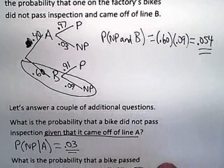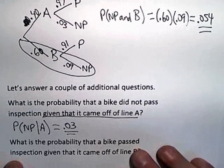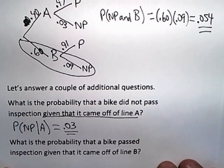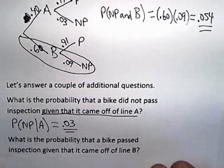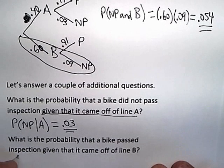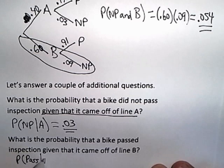Let's do one more. The second question is, what is the probability that the bike passed inspection given that it came off of line B? Okay, this time I'm looking for the probability that it did pass, and since I'm using P's for two different things, I think I'll actually write out the word pass. The probability that it passes given that it came off of assembly line B.